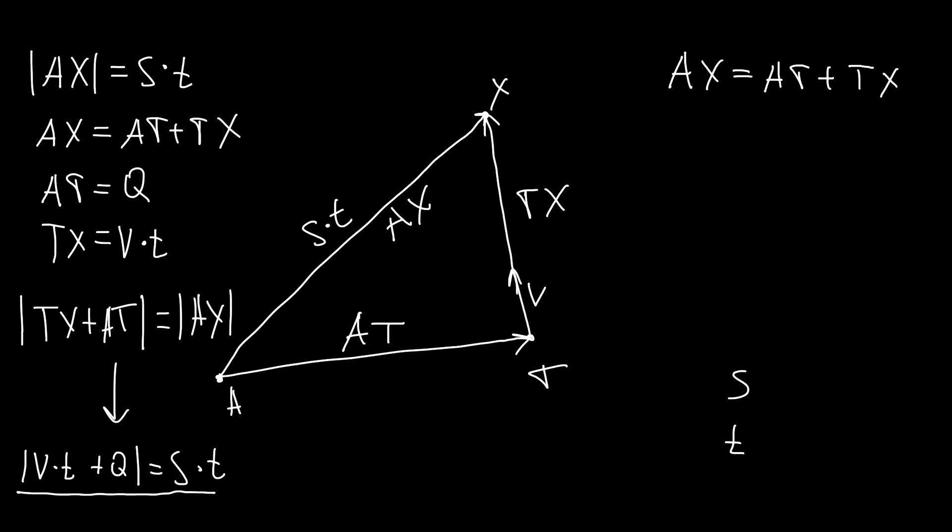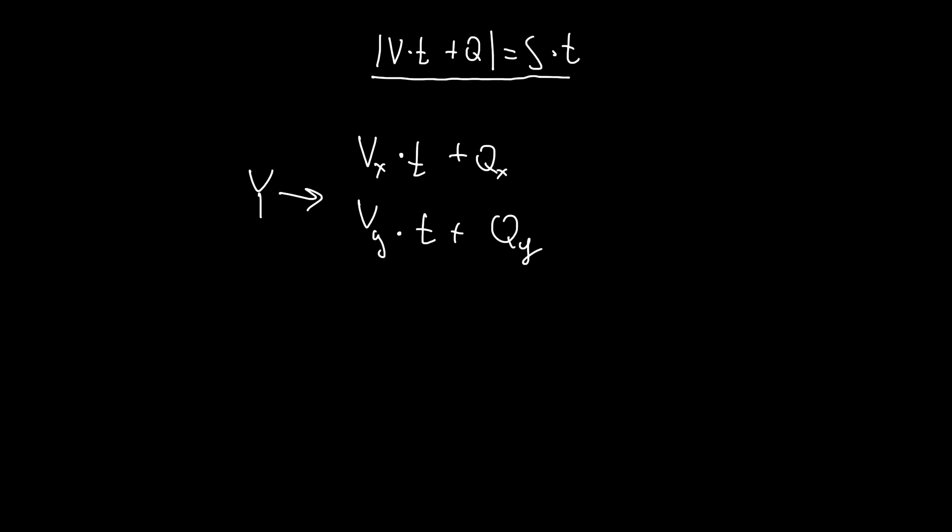And now we have an equation with only one unknown. Let's say that vector VT plus Q is vector Y. And we can represent its X and Y components. And now we can use vector length equation and end up with this. And we can get rid of square root by squaring both sides.